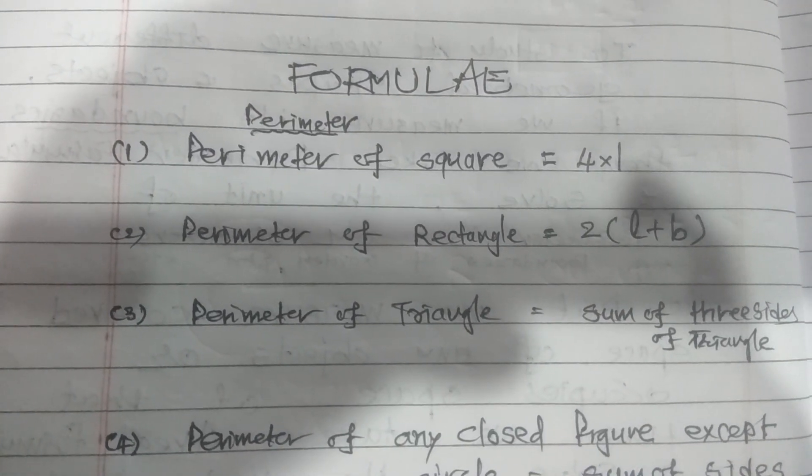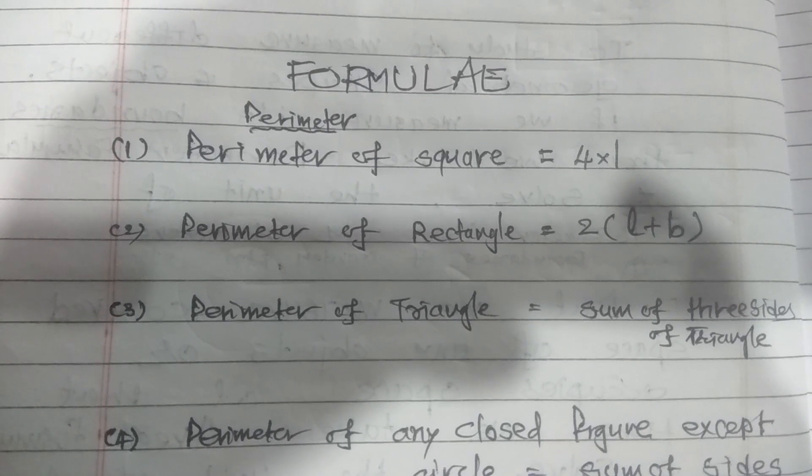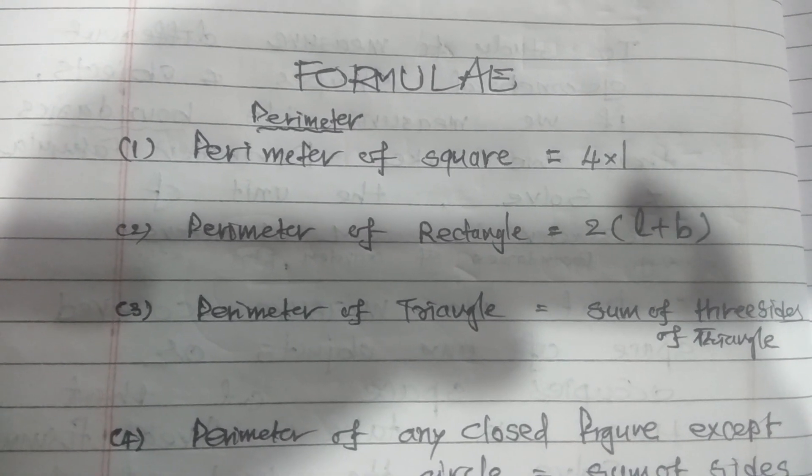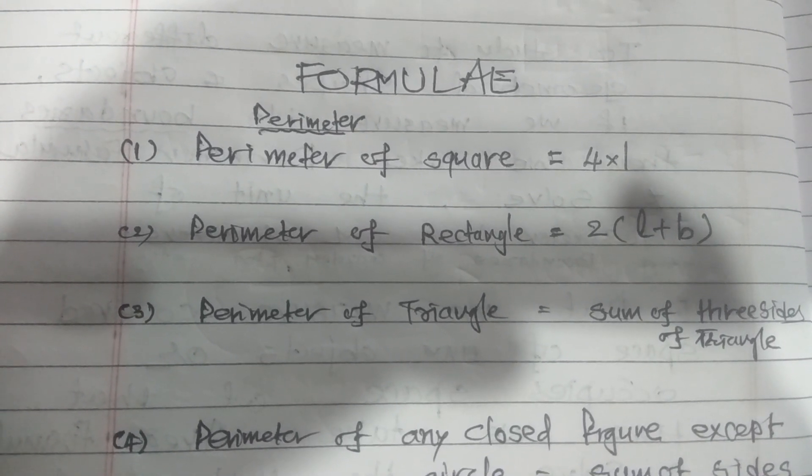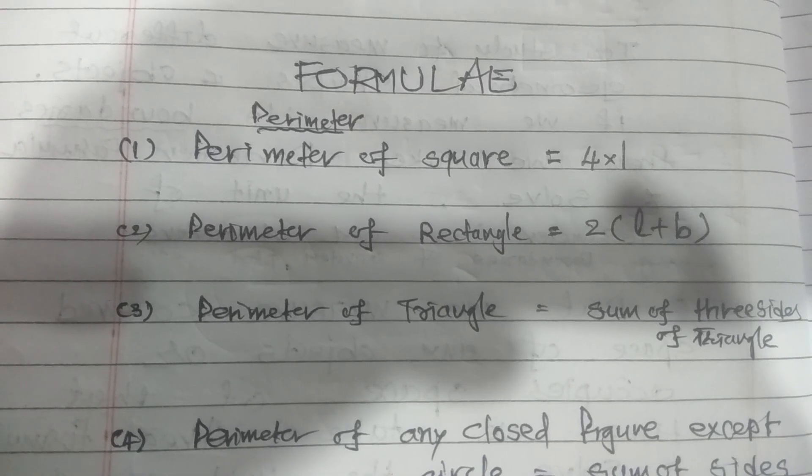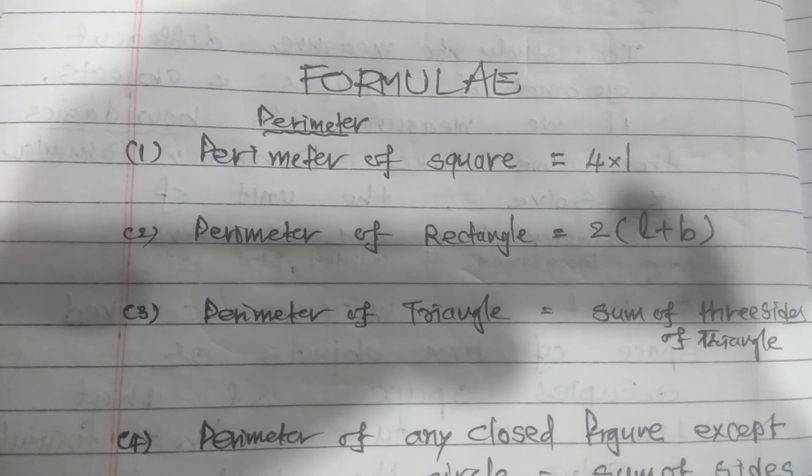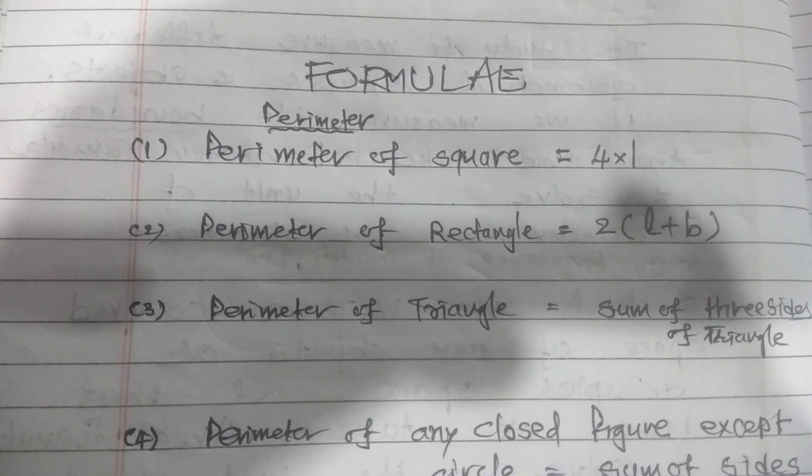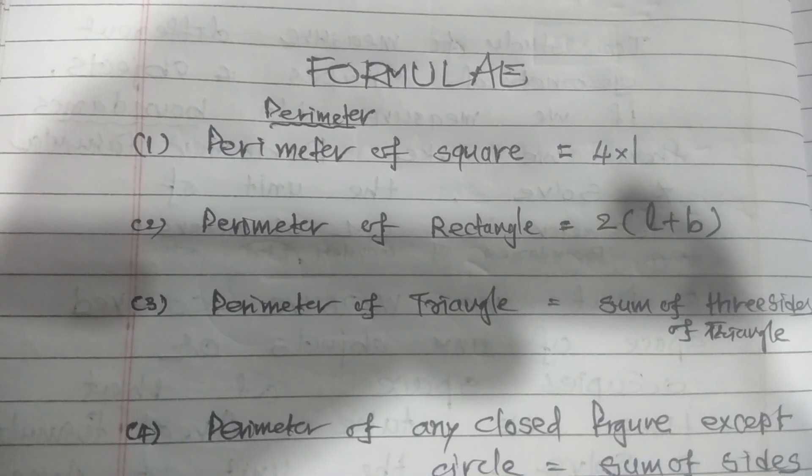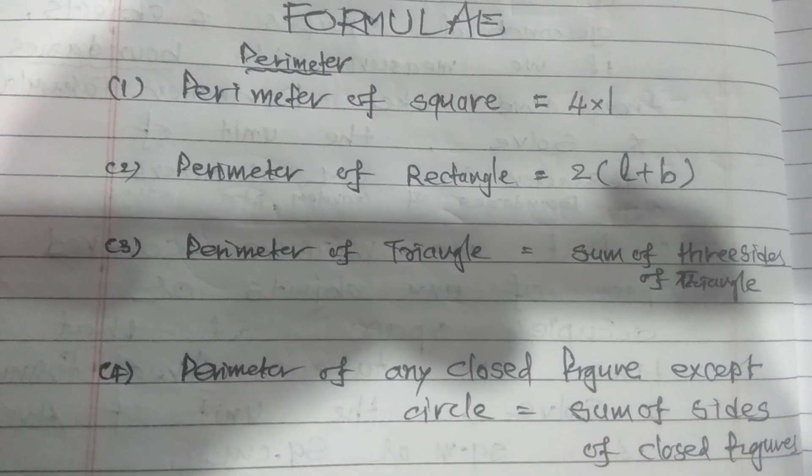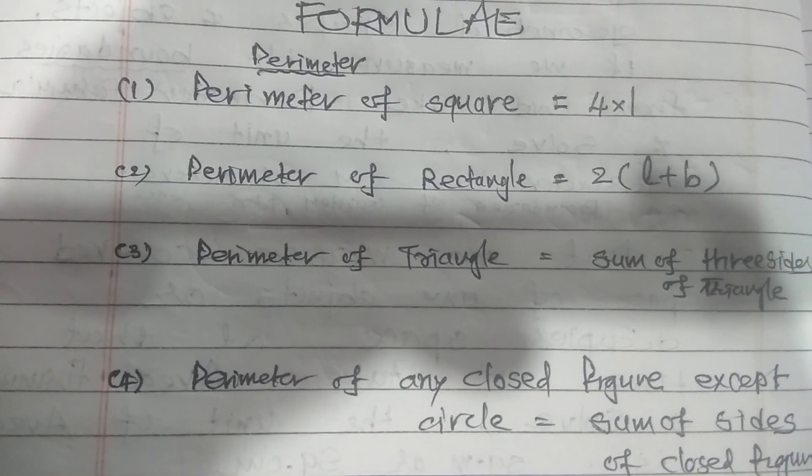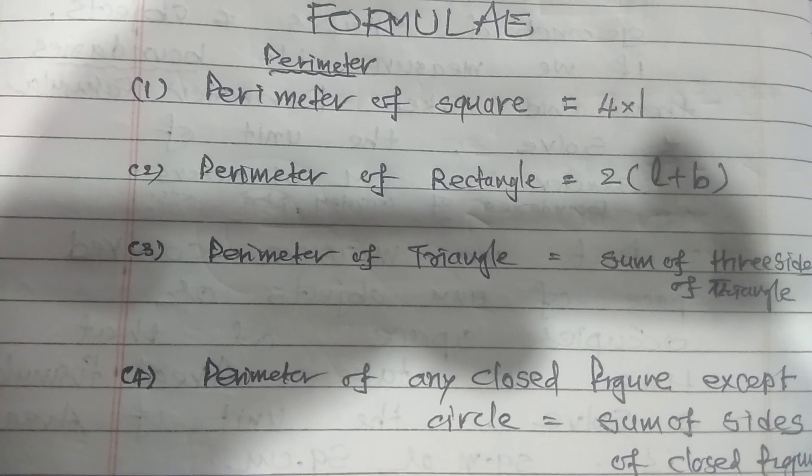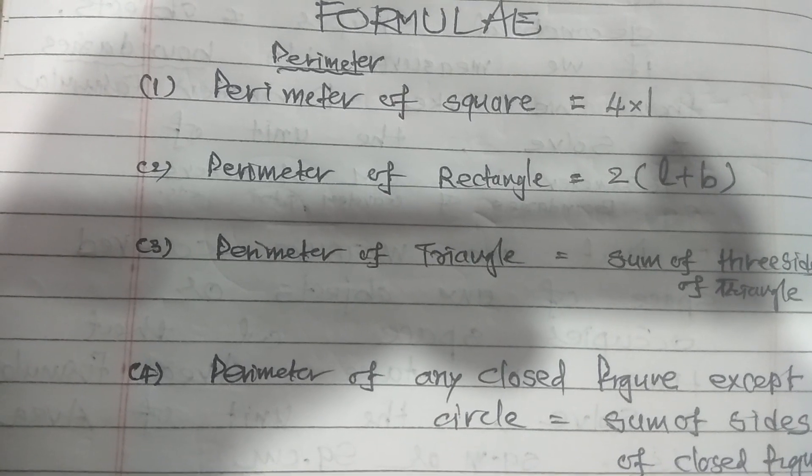Before we start our chapter, students, here we have to note down the formulas of all geometrical shapes and again we recall these formulas. So you have to learn these formulas properly, all the formulas properly. So first of all, we take the parameters. Perimeter of square, that is 4 into L, L means length.